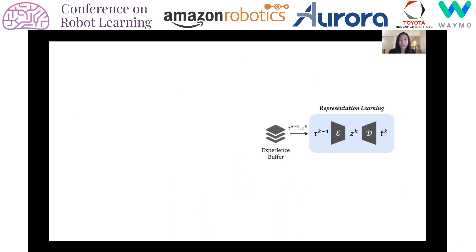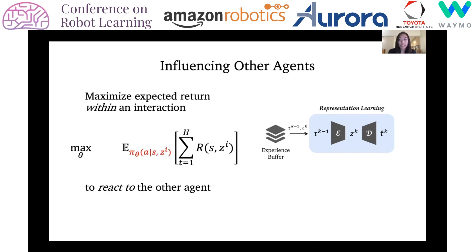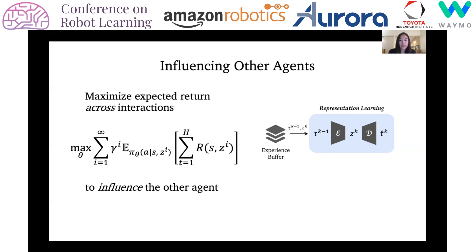With the model of the opponent, the ego agent can learn a policy conditioned on a predicted strategy. But beyond simply reacting, an intelligent agent should proactively influence the strategy. This influential behavior can be learned by maximizing the long-term rewards across interactions. This objective naturally motivates the ego agent to generate behavior that leads to more desirable future strategies in the other agent.